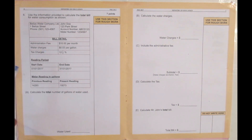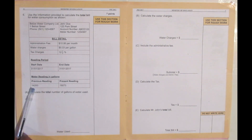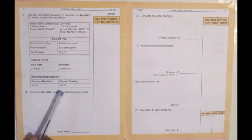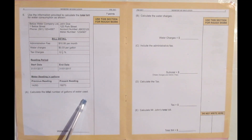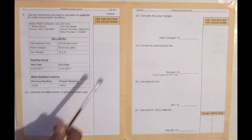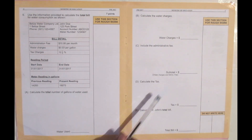The bill details include an administrative fee of $10 per month, water charges of $0.03 per gallon, and tax charges of 12.5%. The previous meter reading is 14,293 gallons and the present reading is 19,273 gallons. Part A says calculate the total number of gallons used, B calculate the water charges, C include the administrative fee, D calculate the tax, and E calculate Mr. John's total bill.